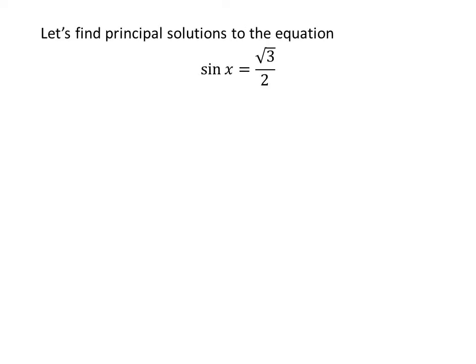Let us first find the principal solutions to the equation sine of x equals square root of 3 upon 2. We know the solutions to the trigonometric equation for which x is greater than or equal to 0 and less than 2π are the principal solutions.